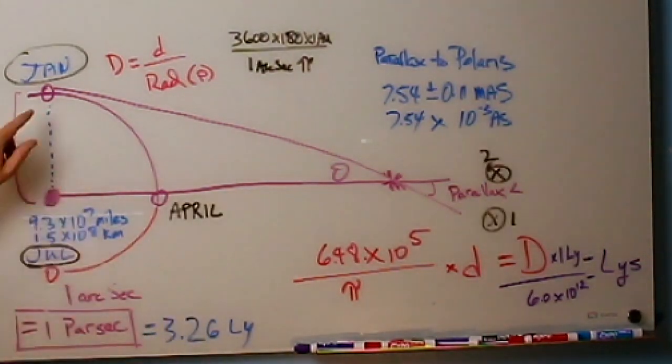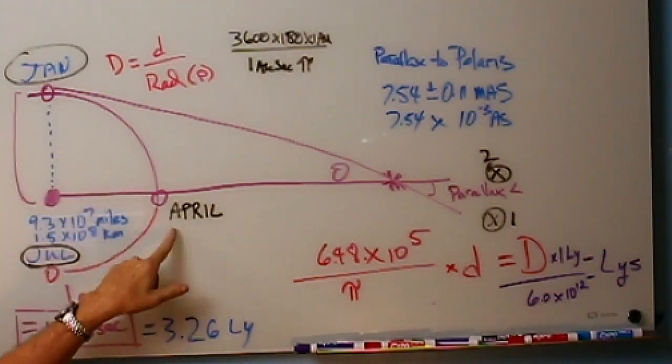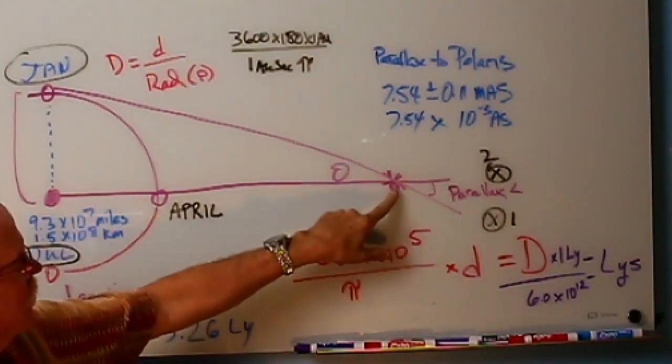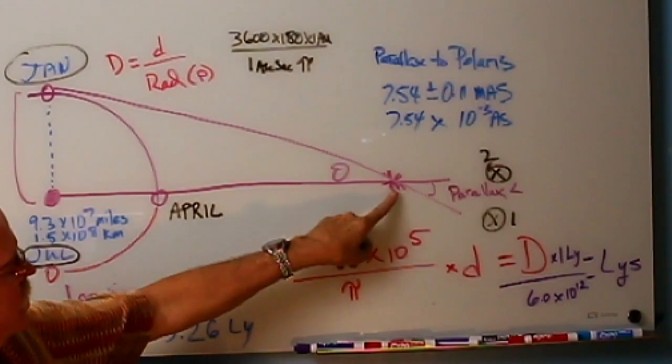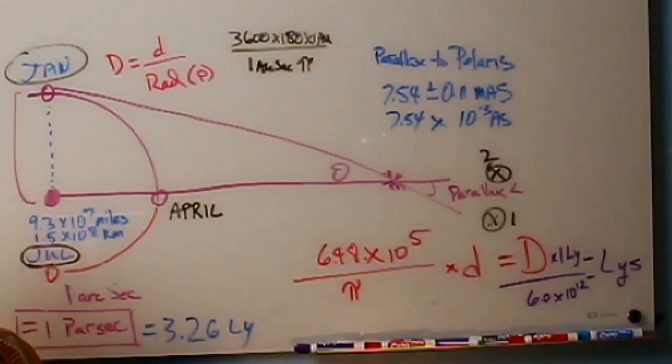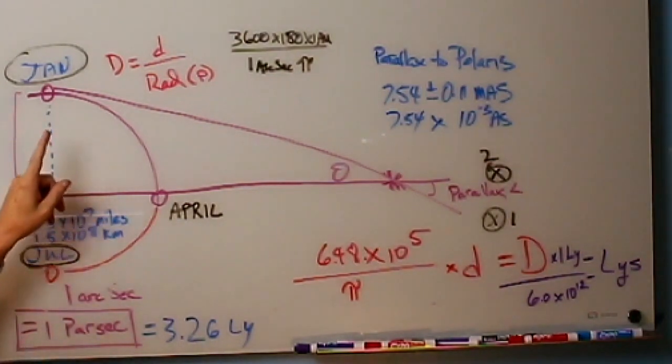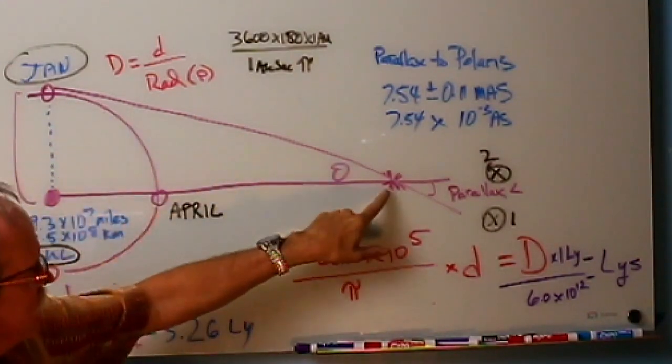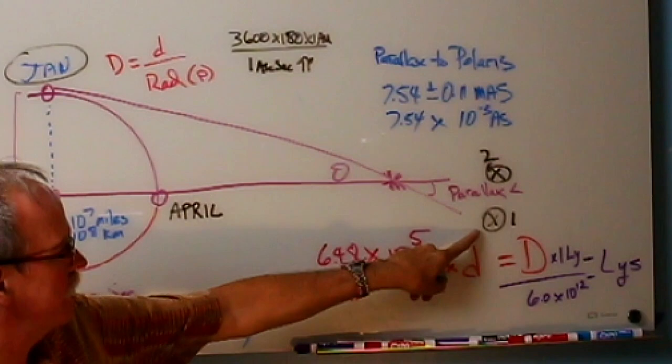What you see here is the Earth in three different locations. We have January, we have April, and we have July. Now, in April, if we look at a star that we're interested in measuring the distance to, if we look past it, we'll see a star in the background. This is different than what happened when we looked at the star in January. We looked out at the star at that time, and we saw another star in the background.